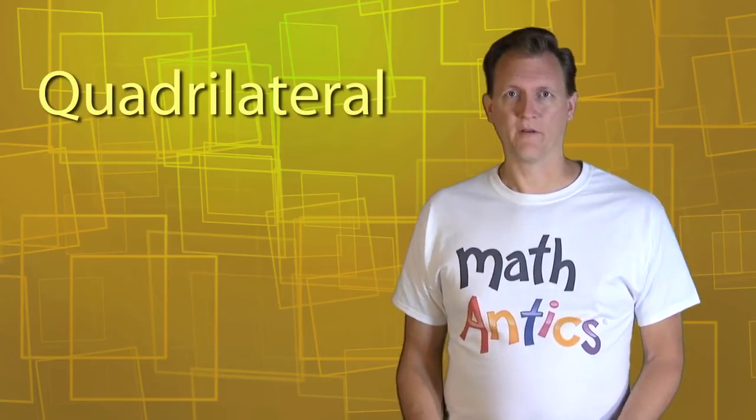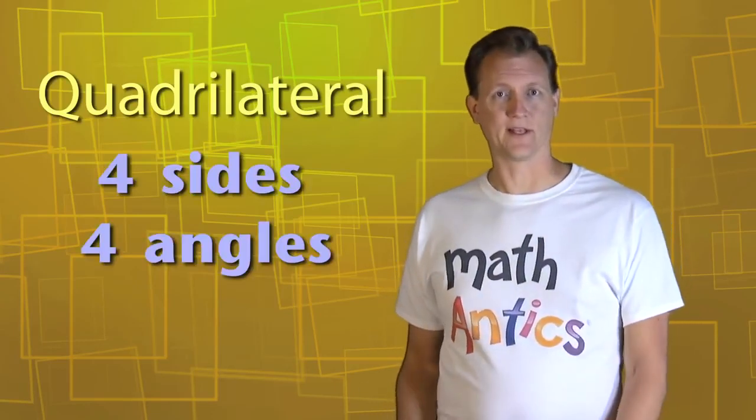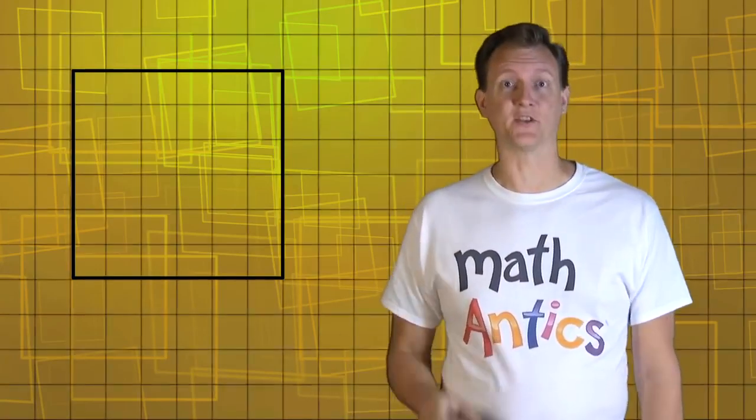Quadrilateral is just a fancy math word for a polygon that has exactly four sides and four angles, like this one. You should recognize this shape, of course, it's a square.